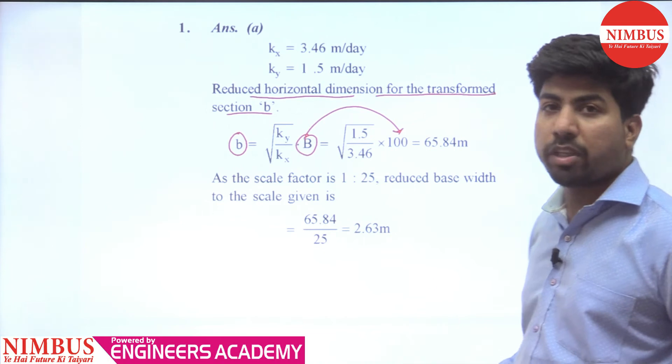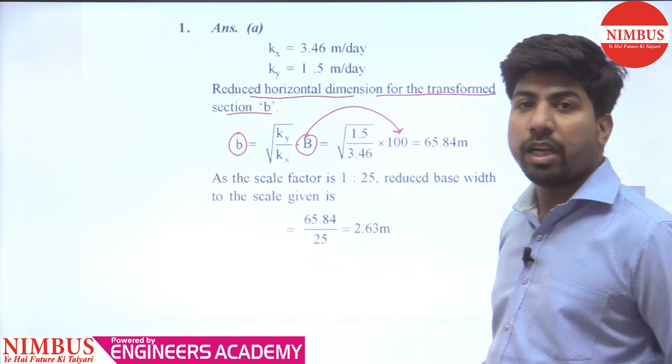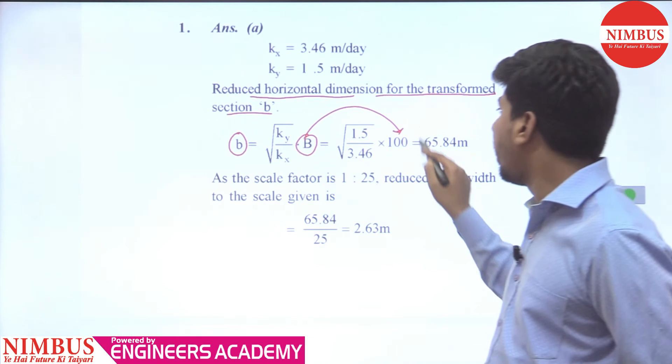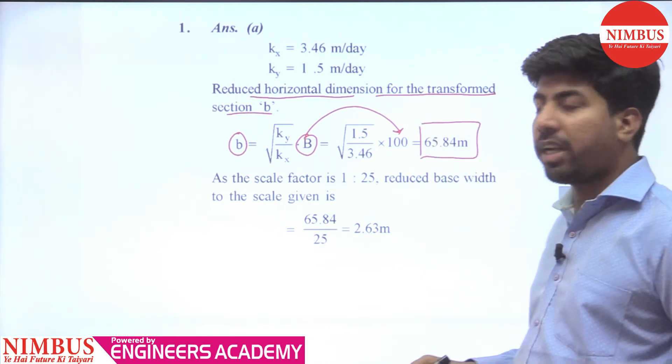100 put here, ky ki value 1.5, here by kx ki value 3.46. Here 65.84 meter aya.